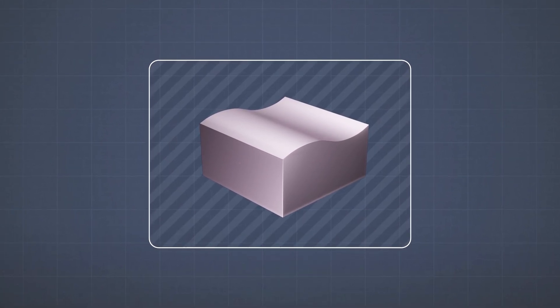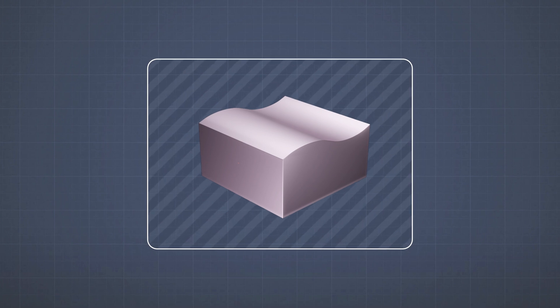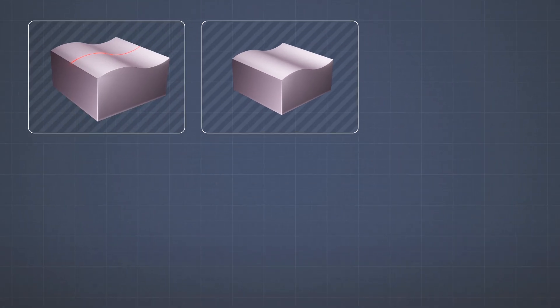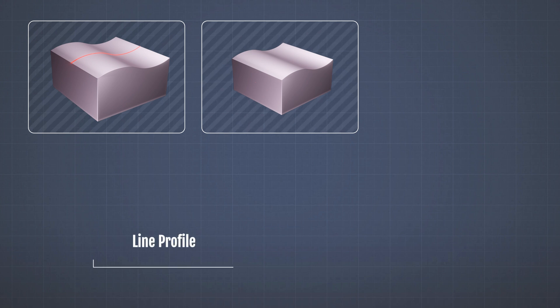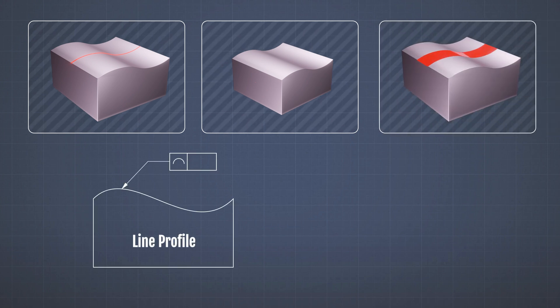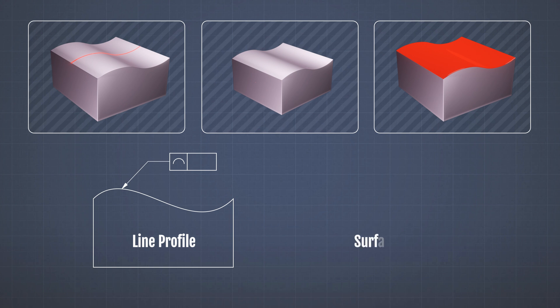In that case, we have to use profile tolerances. If we want to tolerate a line on the surface, we will use the line profile, which looks like this. If we want to tolerate a surface, then we have to use a surface profile, which looks like this.